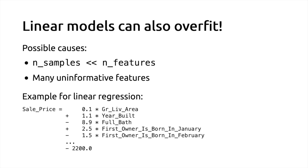For instance, taking the same example as previously — predicting the sale price from gross living area, year built, and number of bathrooms — if you include additional features that are very uninformative, such as the birth month of the first owner of the house, it's very unlikely to be informative about the sale price. But a linear model, if you include that feature among many others and fit on a small training set, may still find spurious correlations with the sale price and assign non-zero — sometimes large — weights to those spurious features. The result is overfitting.